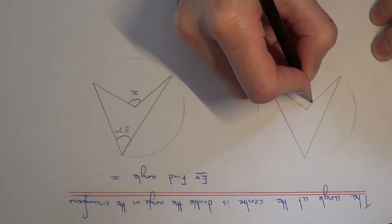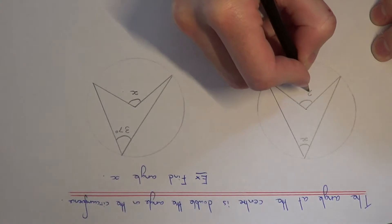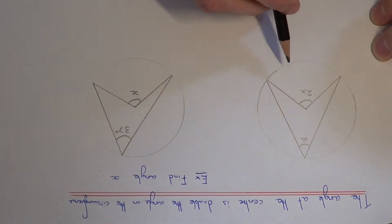then this angle at the centre will be double the angle on the outside of the circle.